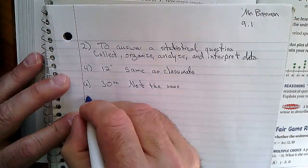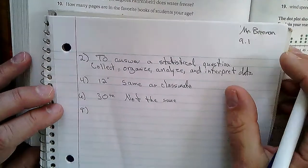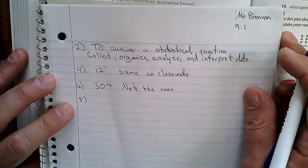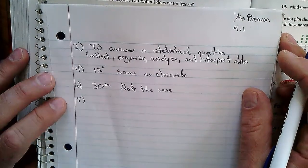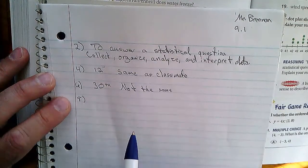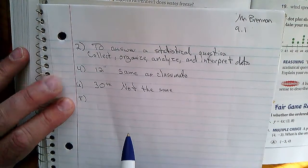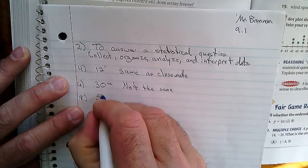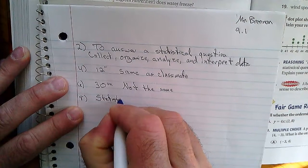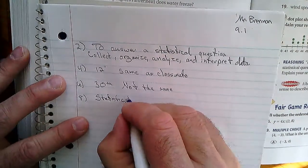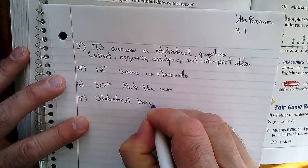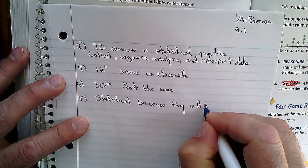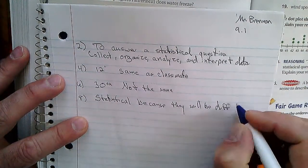Number eight: determine whether the question is statistical. What is the eye color of sixth grade students? So we're going to have to collect and organize data. This is statistical and why is it statistical? Because it will be different. You'll get lots of different data.